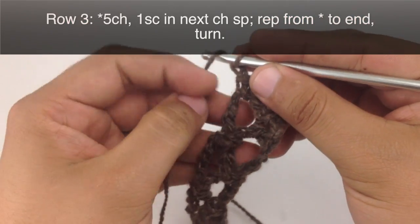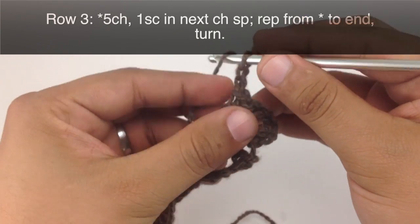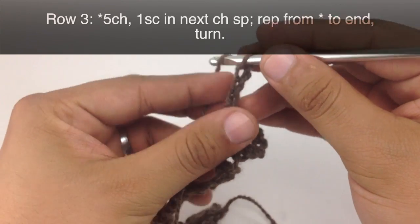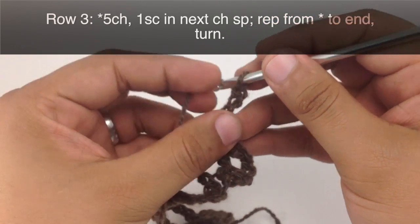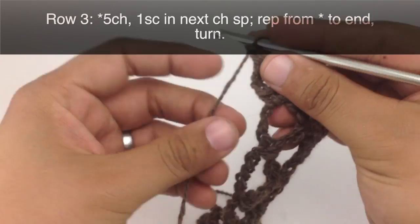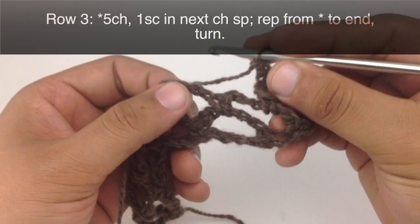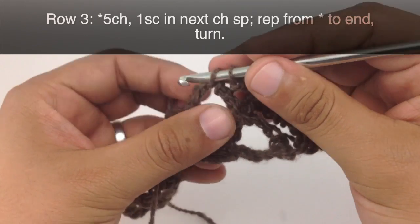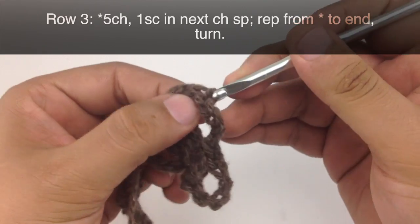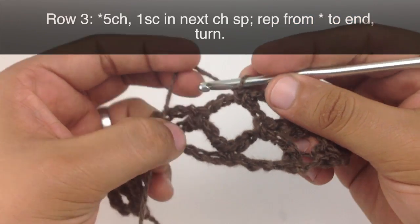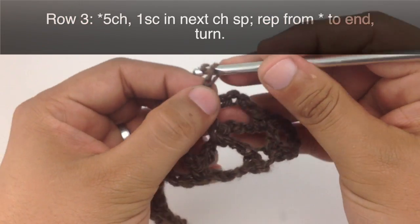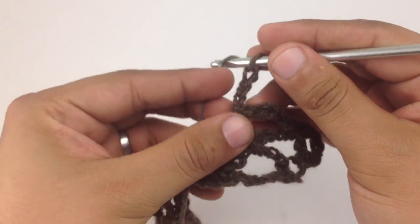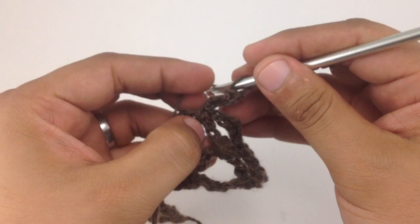And then we are just going to repeat this sequence until we reach the end of the row. So we won't be doing the single crochet into the turn chain. We are just going to be doing this into the center of the chain space all the way across. And then we will turn our work. So we are going to repeat row 3 only until you have reached your desired length. And that is how you crochet the diamond mesh stitch.